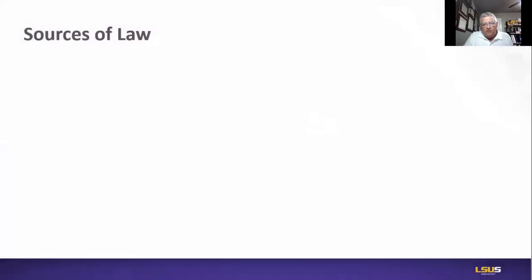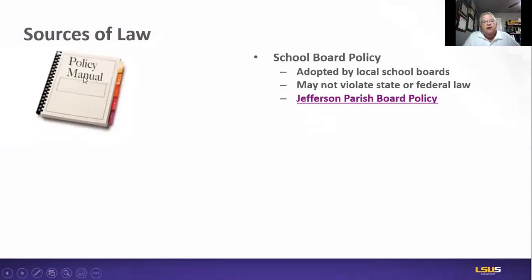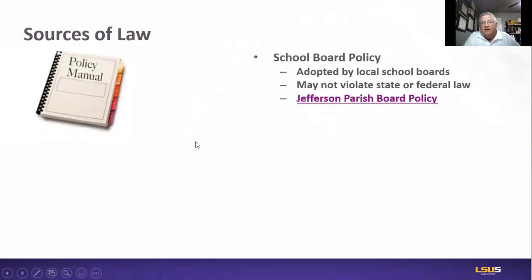I just want to provide kind of an overview on Chapter 1, kind of the introduction. We talked first about different sources of law. You can see here the sources of law. There are three different sources of law that we'll be dealing with in this class. The first is the local school board policy. Local school board policy is adopted by local school boards and may not violate state or federal law.